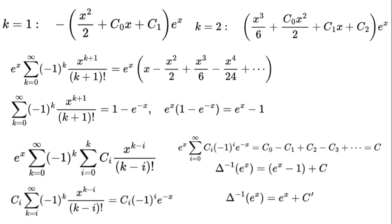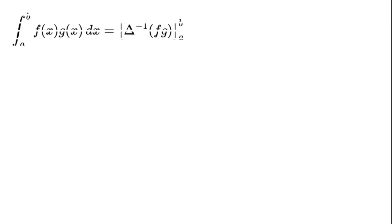Let's use our antiderivative to compute definite integrals. The idea is simple: the integral from a to b of f(x) times g(x) dx equals delta to the power of negative 1 times (f times g) evaluated from a to b.